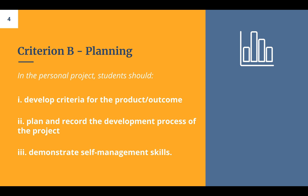Criterion B is pretty straightforward: develop your criteria, plan and record the development process of the project. Here you might talk about any hiccups you've had, what things you spent more time on, and show exactly how you made your finished product — what are the different steps. Then demonstrate self-management skills. The IB says people often just talk about time management, so make sure you cover all the different skills. Look at the ATL spreadsheet — it includes things like effective skills and dealing with stress, which all personal project students have had to do this year.